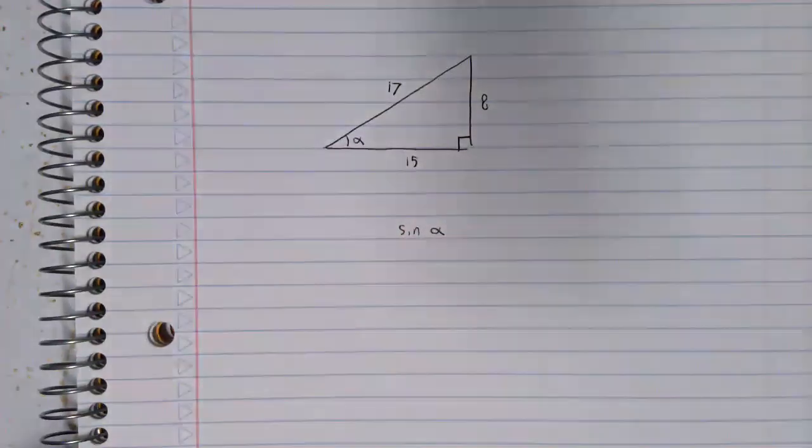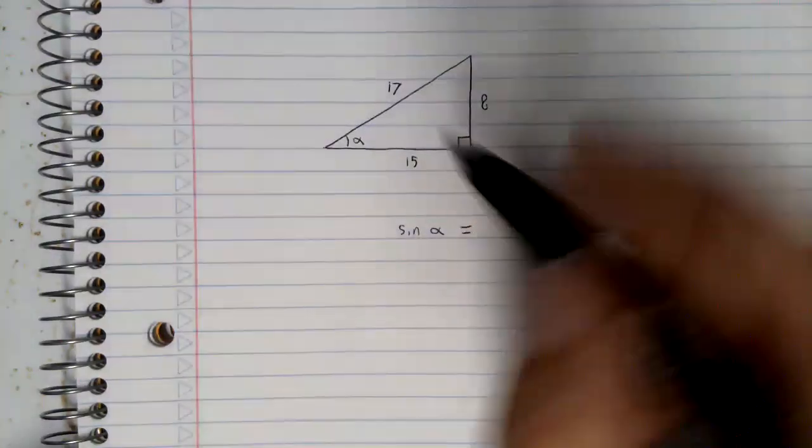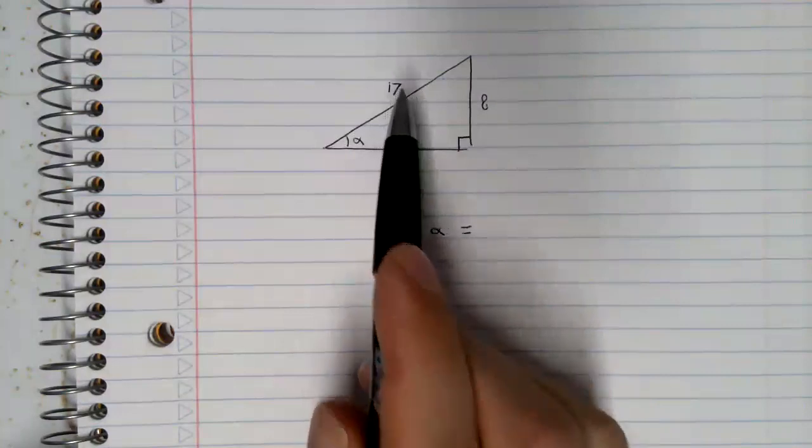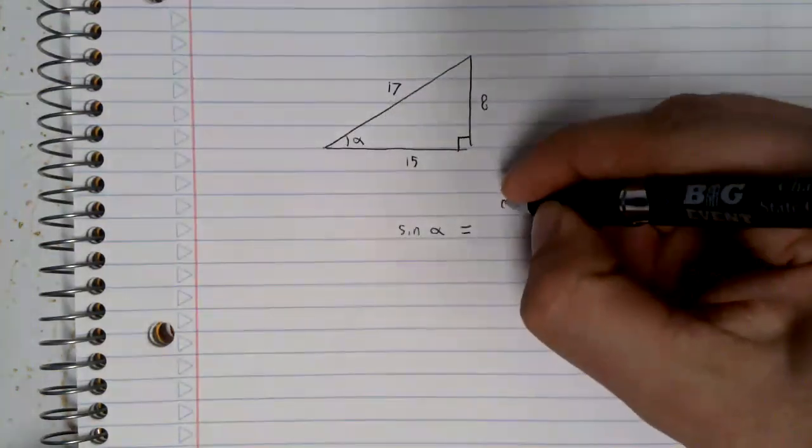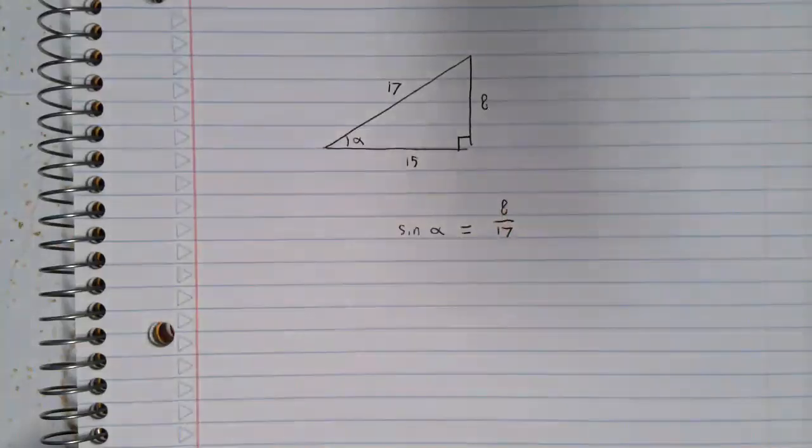But the sine of alpha is the opposite side over the hypotenuse, 8 over 17.